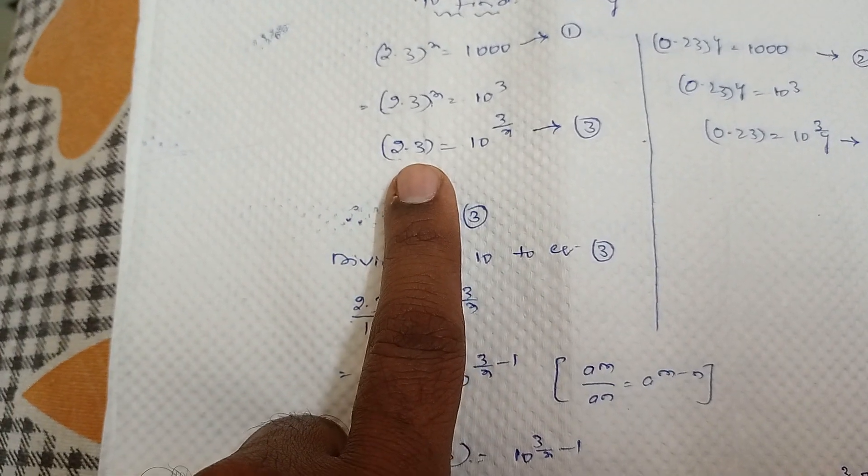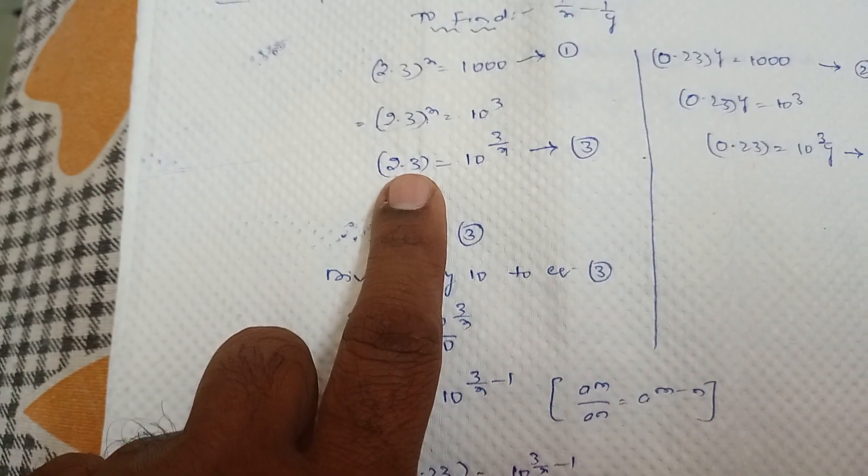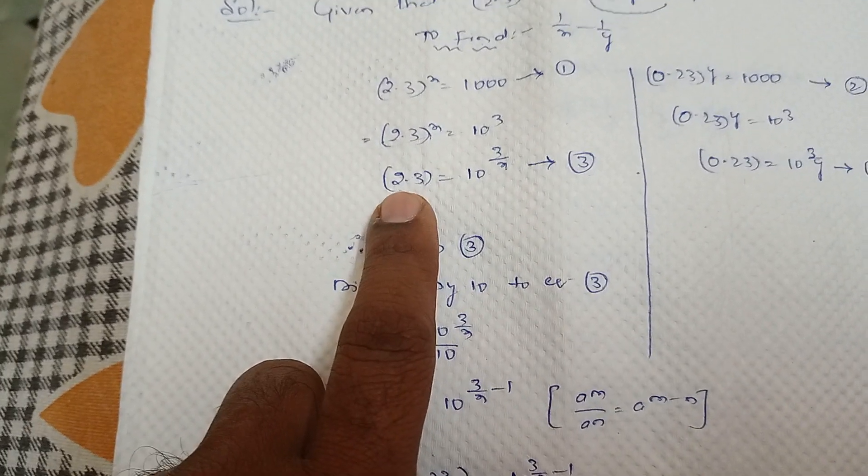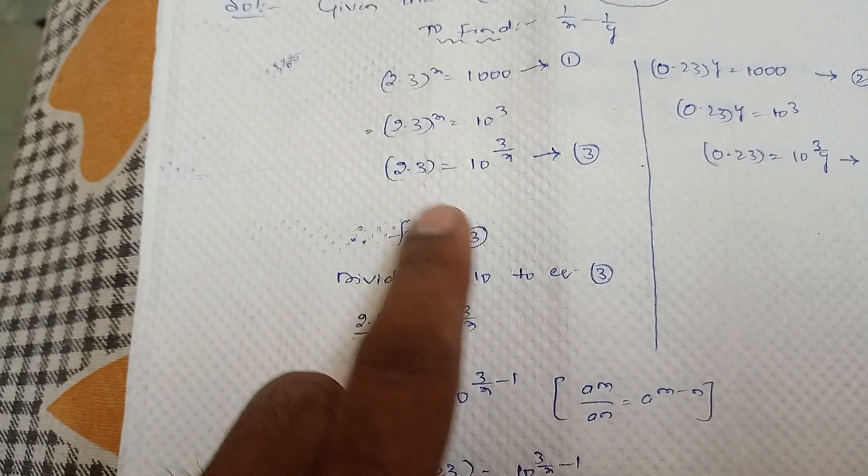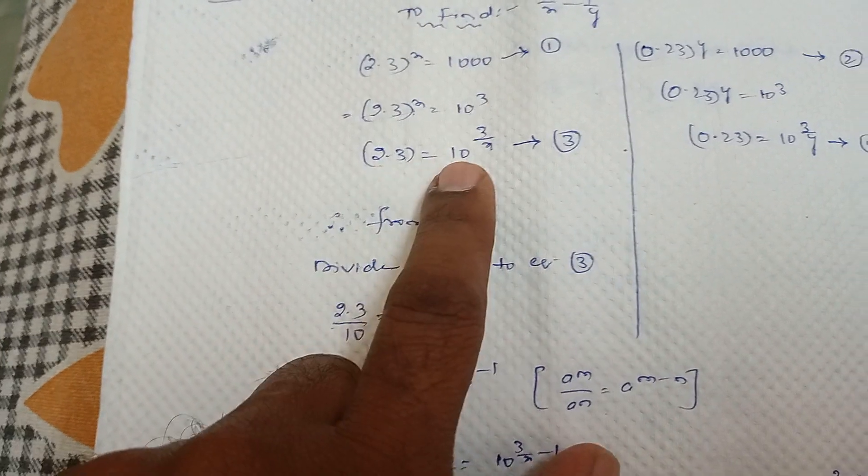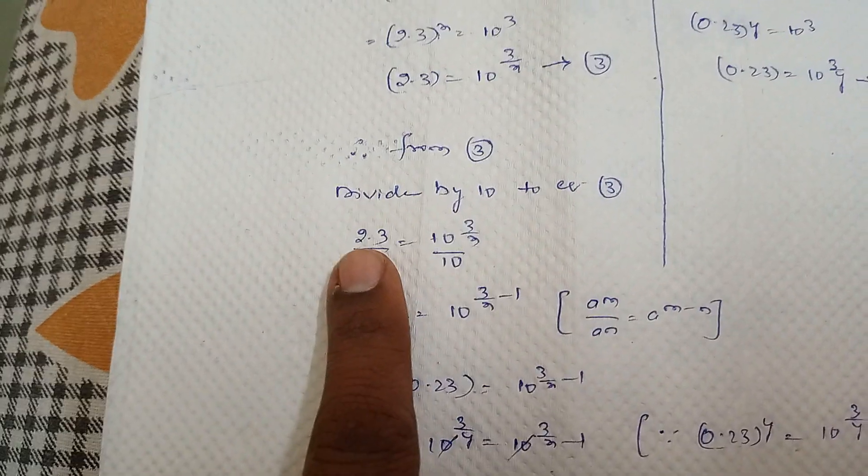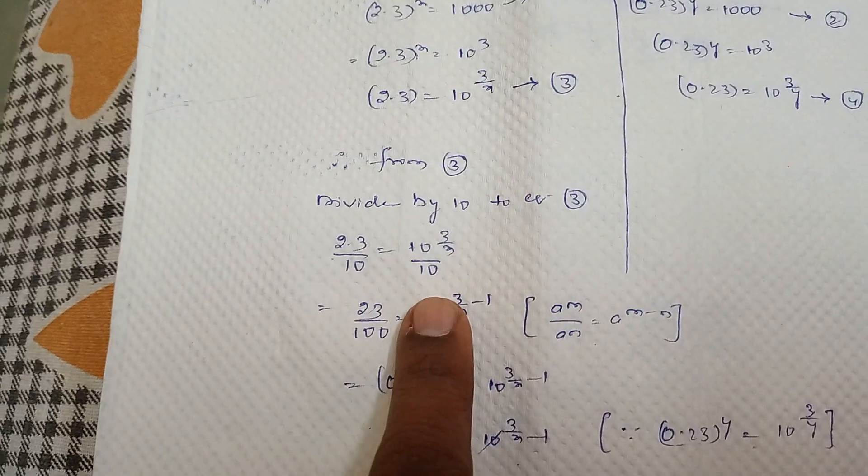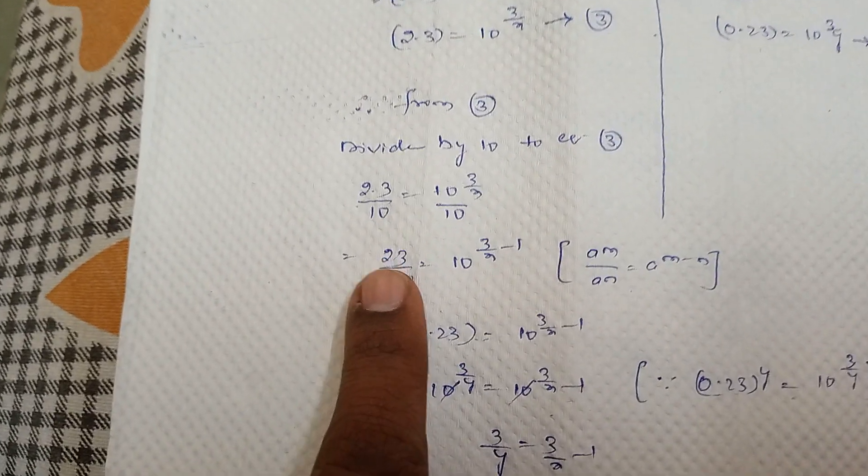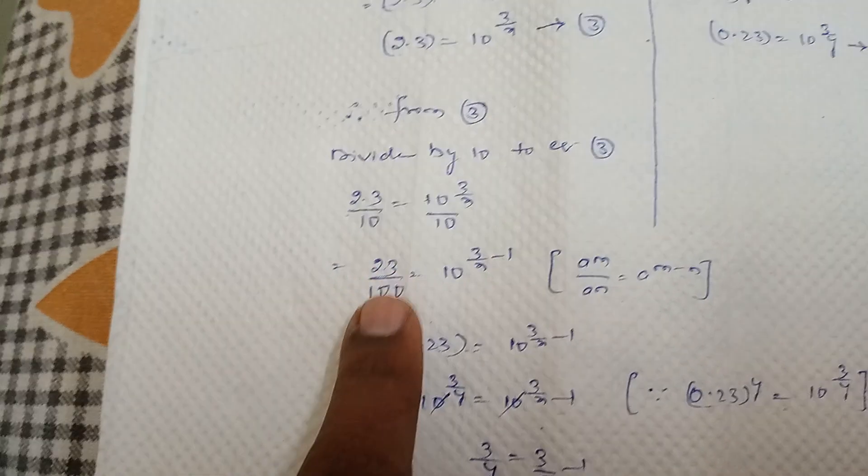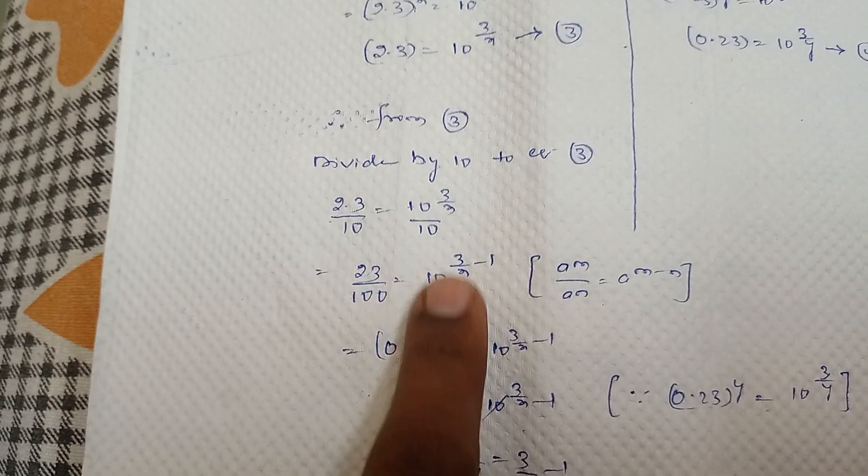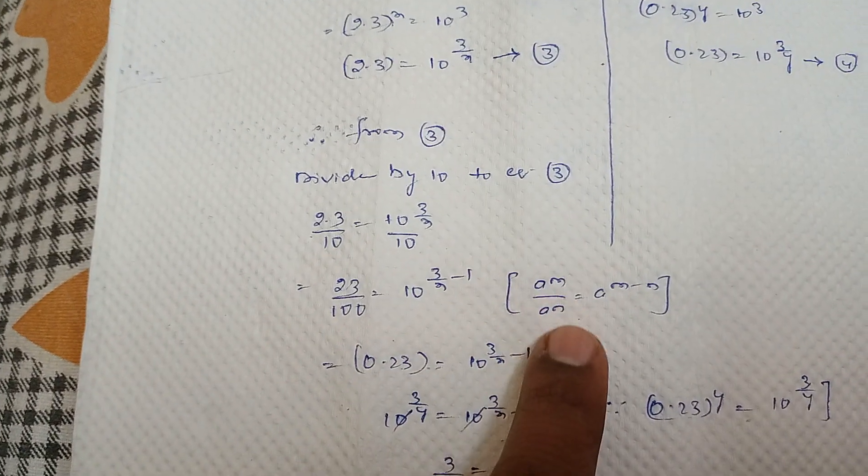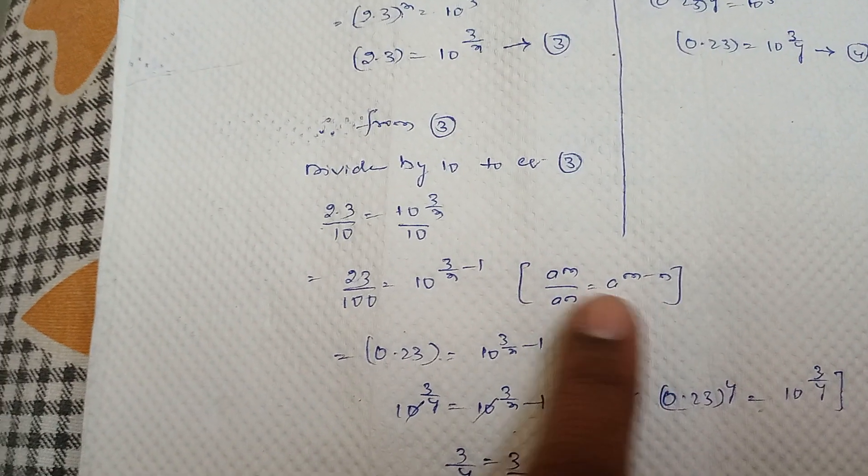From equation 3, this one after one place is there. So we need to divide with 10. Divide with 10 on LHS and RHS part. So we get 2.3 by 10 equal to 10 power 3 by x by 10. So simplify. It becomes 23 by 100 is equal to 10 power 3 by x minus 1. This is in the form of a power m by a power n that equal to a power m minus n.